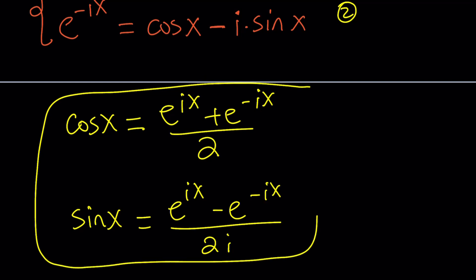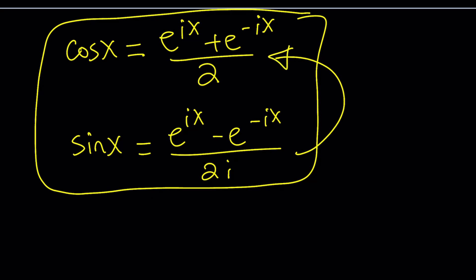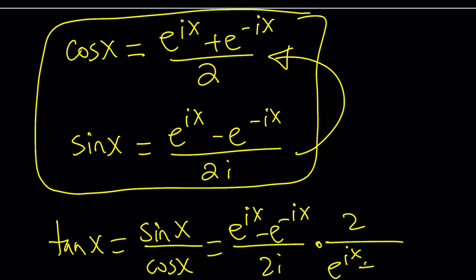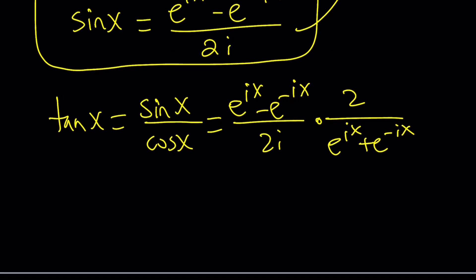And if you go ahead and subtract these equations, the first minus the second, and then you're going to get the i sine x twice, so you have to divide by 2i, and that's going to give you sine x equals e to the ix minus e to the negative ix divided by 2i. These are two important formulas that gives us sine and cosine.